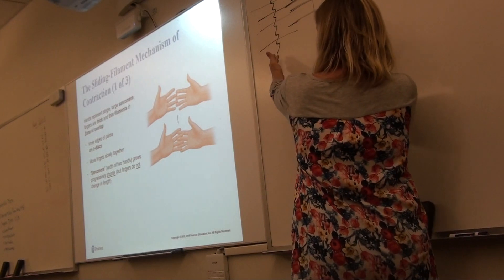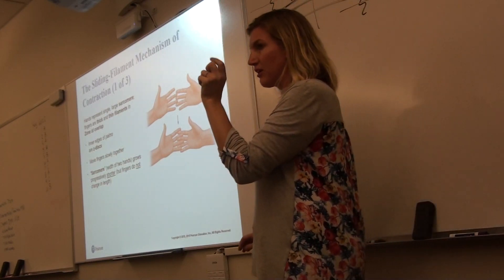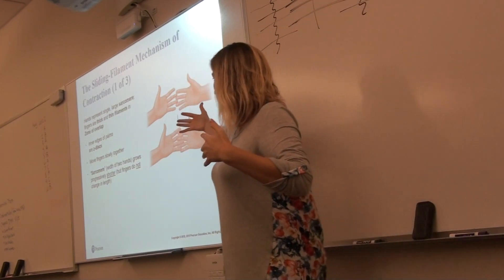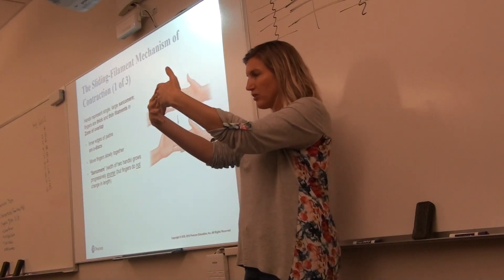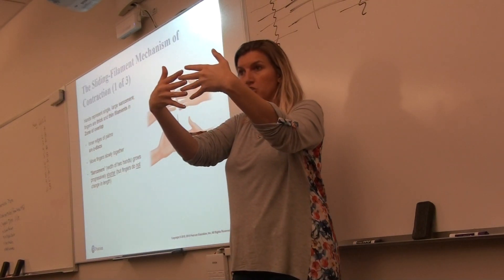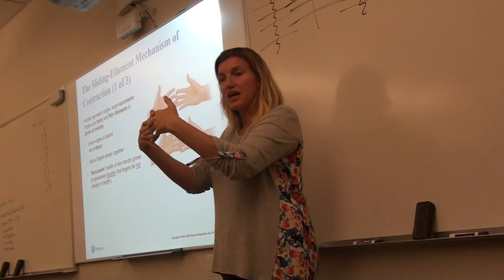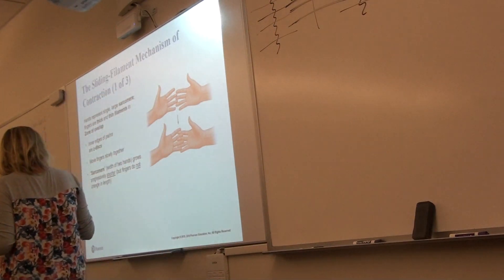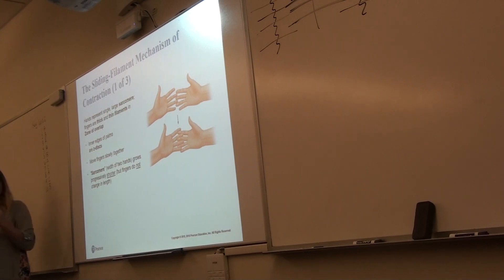In the sliding filament theory, these Z-lines are moving towards each other. Nothing is actually shortening — the thick filaments are not shortening, the thin filaments are not shortening. It's just that the area where they overlap is getting bigger. Think of your wrists as your Z-lines with thick and thin filaments overlapping — all that's happening in a muscle contraction is this shortening. This is the sliding filament theory. The sarcomere grows shorter, but the filaments themselves don't — where they overlap is physically changing.